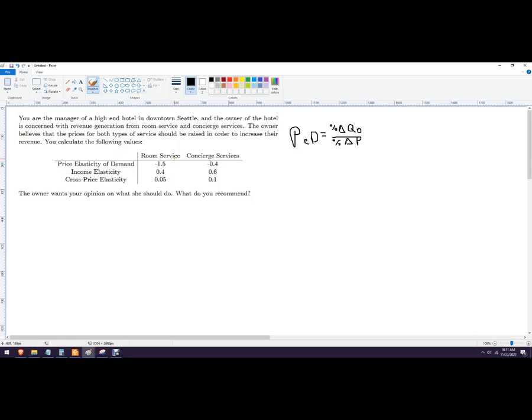So with the first one for room service, we've got negative 1.5. These are always negative with price elasticity of demand because when price increases, quantity demanded falls and vice versa. So in this case, we've got negative 1.5.